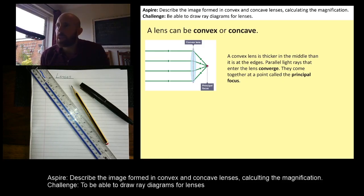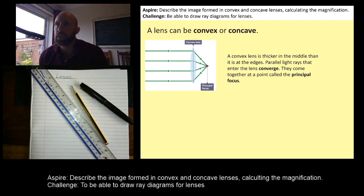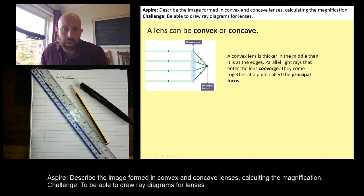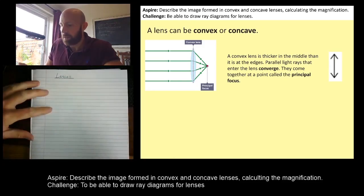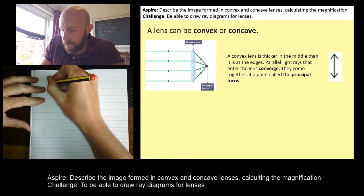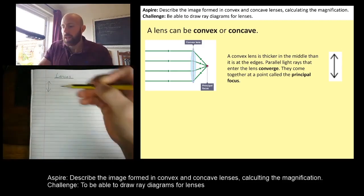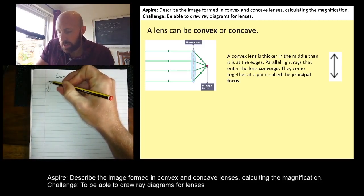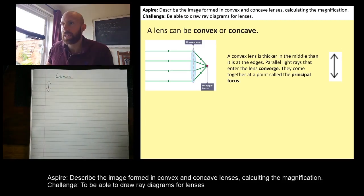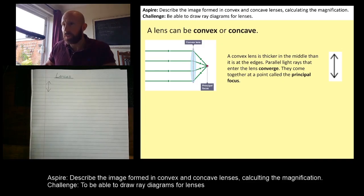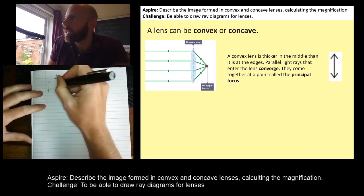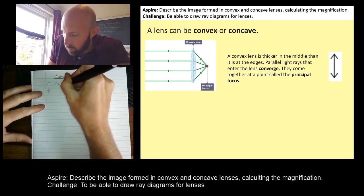If we draw a convex lens on a ray diagram, it gets quite complicated. So what we can do is use this symbol instead — it looks like the lens but we've just taken the middle part off. It just makes things a little bit less confusing when we draw a ray diagram. So that is a convex lens symbol.